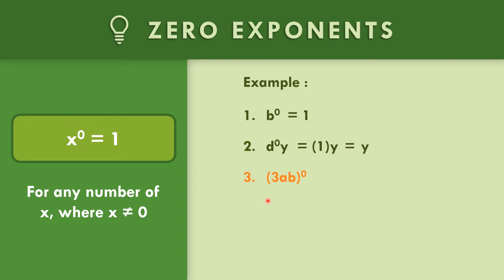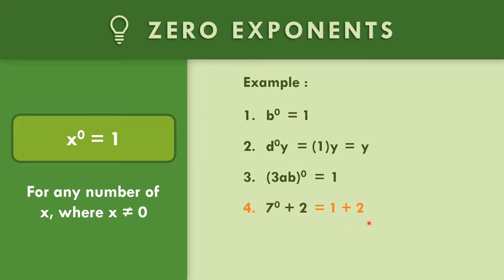In number three, the quantity 3AB raised to zero — as a whole, that value is equal to one. In number four, seven to the zero plus two: seven to the zero is one, so one plus two equals three.